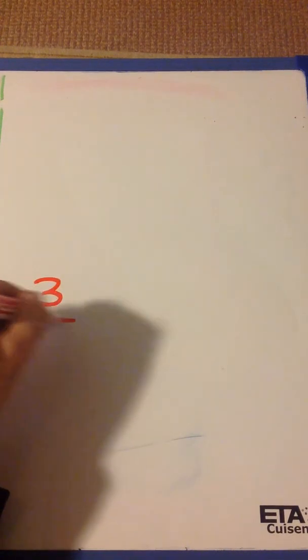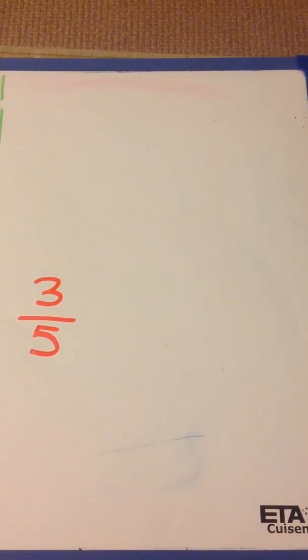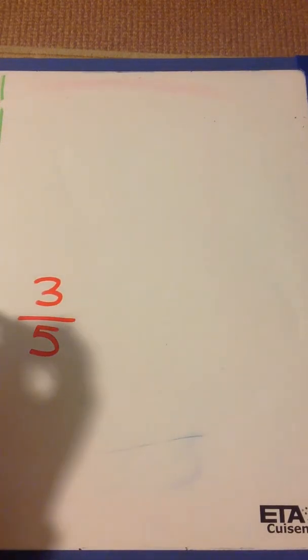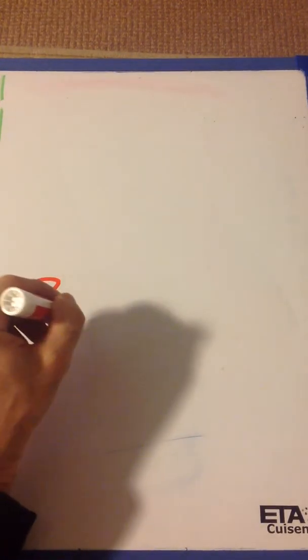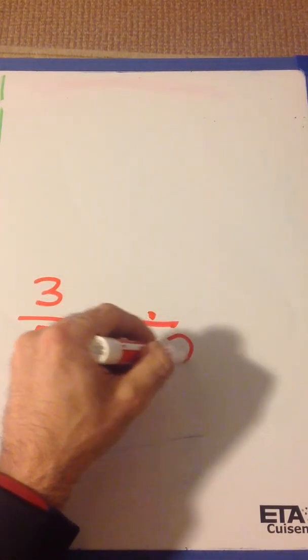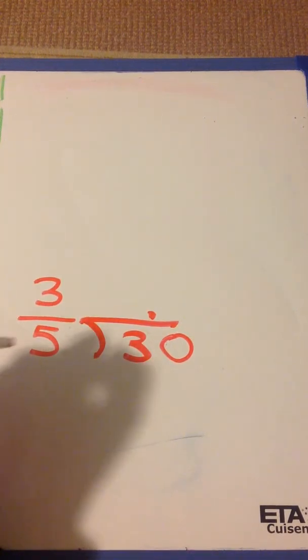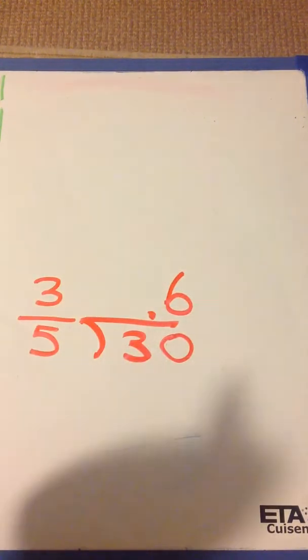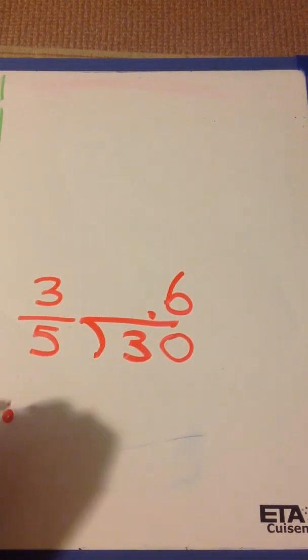So what if we had a fraction like 3 fifths? Well, we have to make a decimal to get the percent. The top number is always in the box. 5 doesn't go into 3, but it goes into 30 six times. So now we have 0.6.